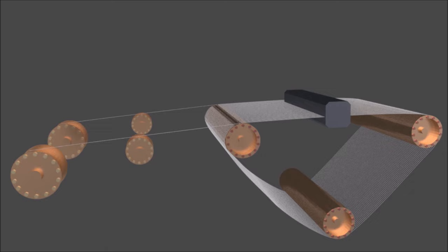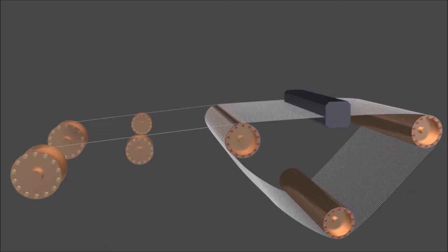Diamond-coated wires then cut through the ingot to produce thin wafers, which are the base material for solar cells.